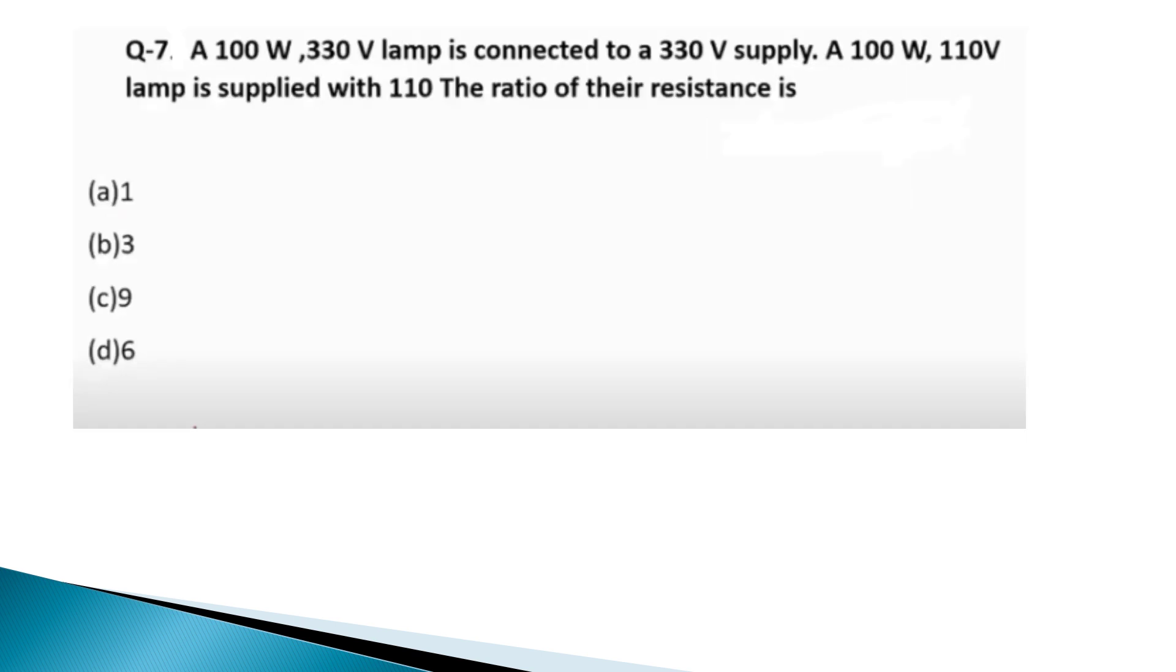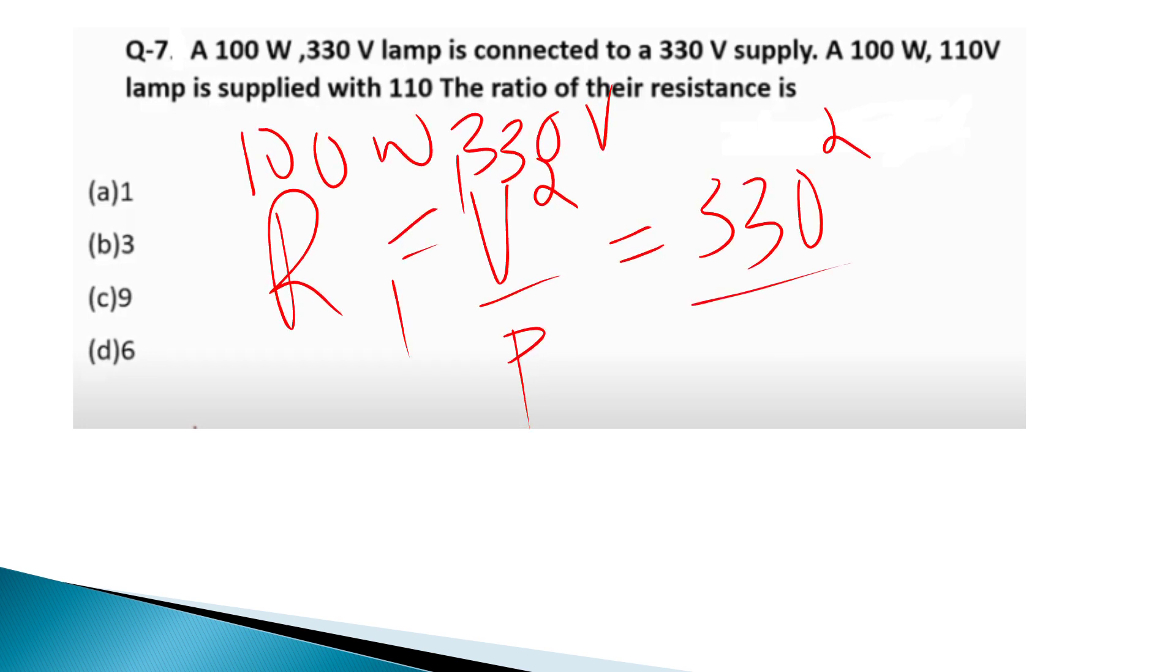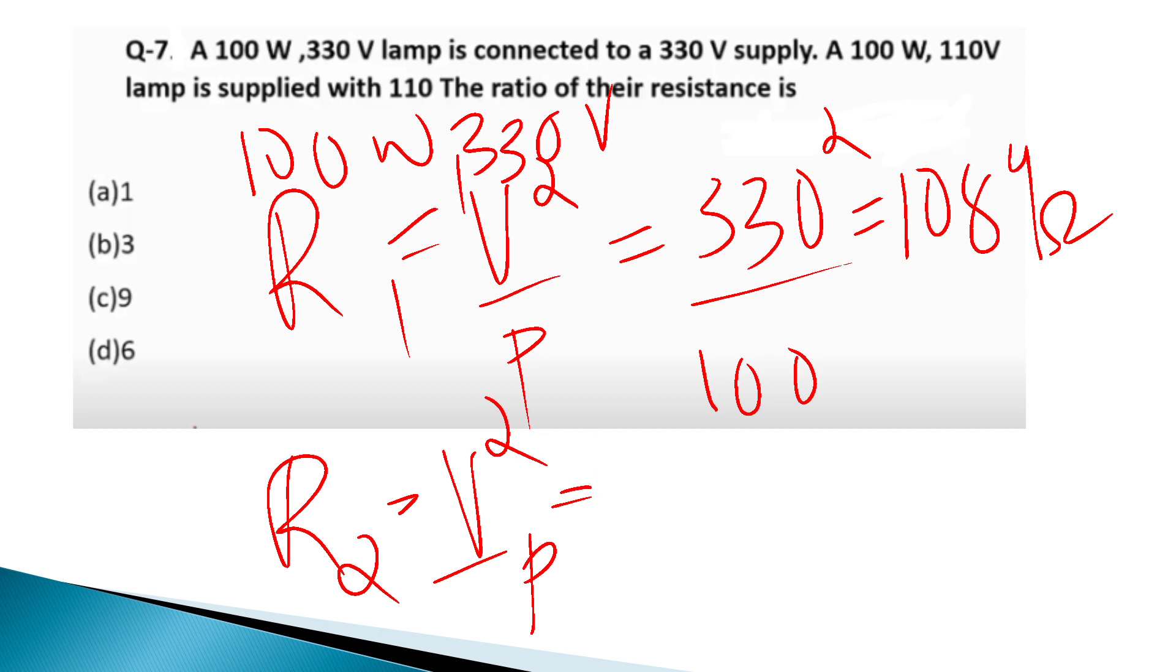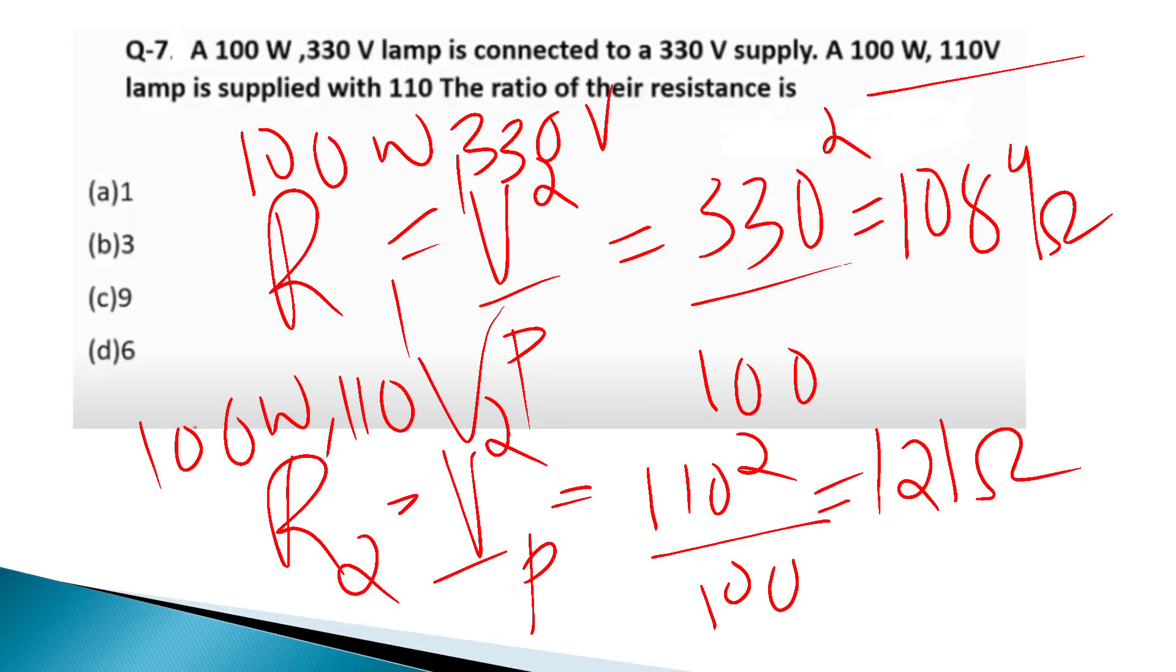A 100 watt 330 volt lamp is connected to a 330 volt supply. A 100 watt 110 volt lamp is supplied with 110V. The ratio of the resistance. R1 equals V squared by P, 330 squared divided by 100, solve the value 1089 ohm. R2 equals 110 squared divided by 100, 121 ohm. The ratio of the resistance is 1089 divided by 121, option C is 9.